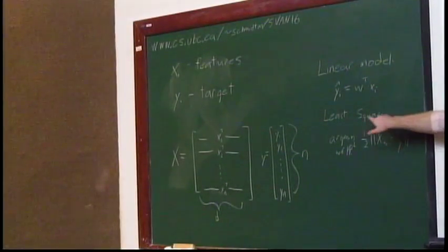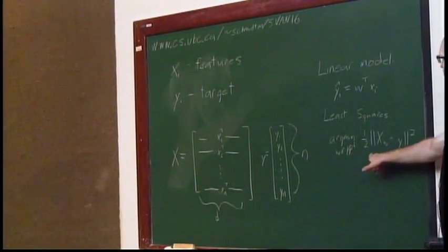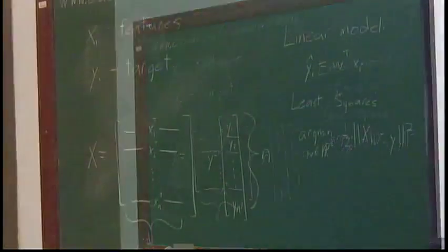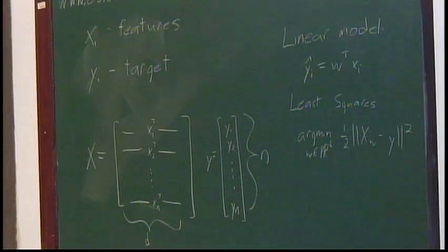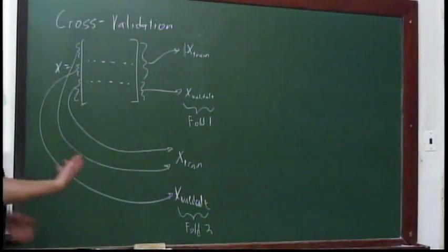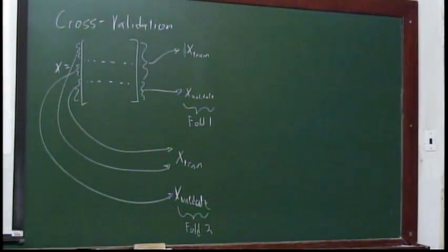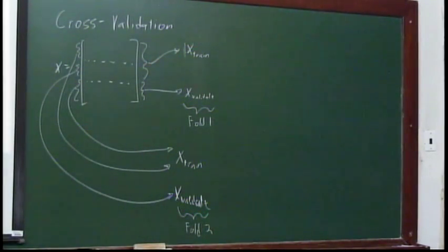We've been talking about the linear model where our prediction YI hat is given by W transpose XI, and we talked about least squares where you minimize the norm of X times W minus Y squared. At the very end we talked about cross-validation, where on fold one of three-fold cross-validation you take two-thirds of your data to train and one-third to validate. That gives you one estimate of the error. On the next fold you grab different two-thirds to train and one-third to validate, fitting a completely separate model. You do this a third time to validate on the last part of the data, and that way you can train on a little bit more data than if you just split it 50-50.